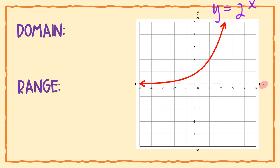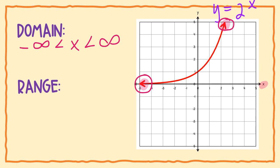If you look at this picture going side to side, it might look like it ends right there, but that's a trick because of the arrows. The arrows mean it's going to keep going forever in both directions. So the domain is negative infinity is less than x is less than positive infinity.